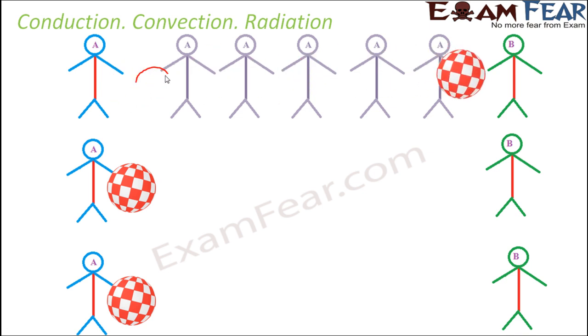See, A was here. A will pass on the ball to this guy, this guy will pass it on to this guy and so on and finally it will reach B. So this is the first way of transferring the ball to B.